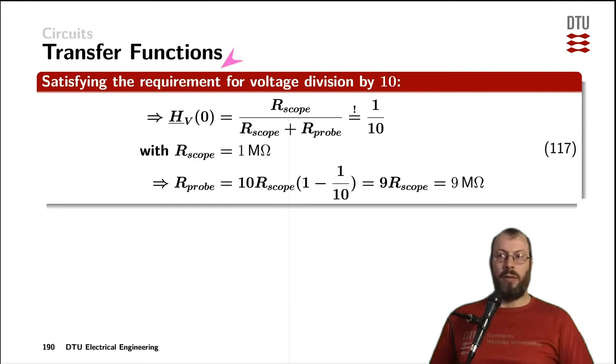Now we have already calculated enough information to satisfy the first requirement, the requirement for a voltage division of a factor of 10 at all frequencies, which includes zero. So if we look at it at a frequency zero, we only have the resistances left. And with the given resistor from the scope, we are left with one unknown only, and that's the probe resistance, which we can calculate into nine times the scope resistance. So that means we want the probe resistor to be around 9 megaohm, which is a pretty high number for a resistor.